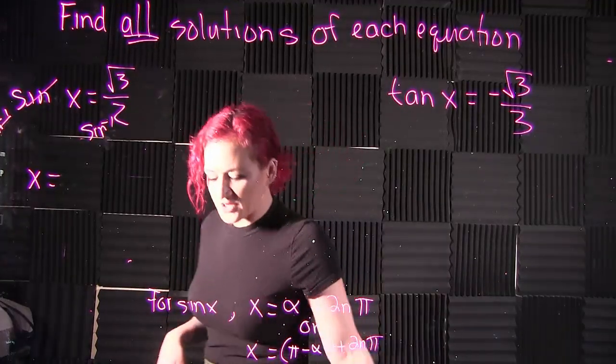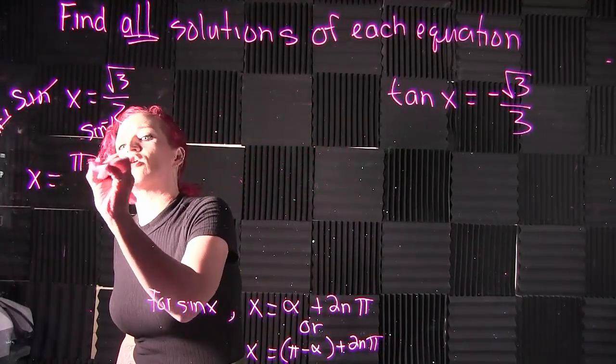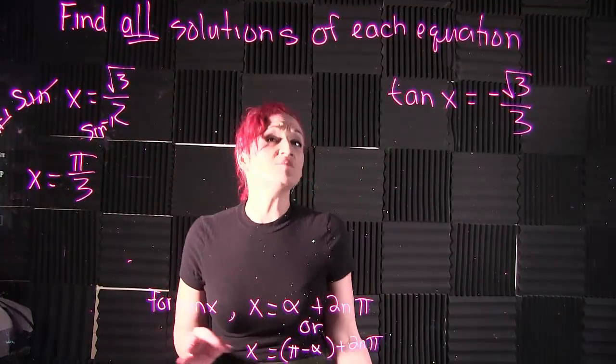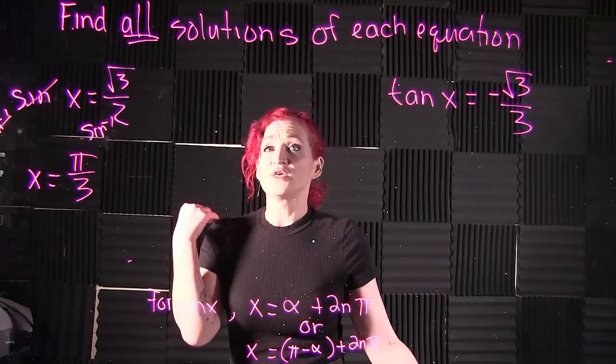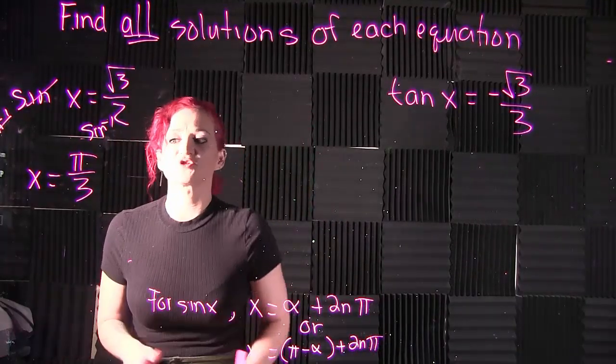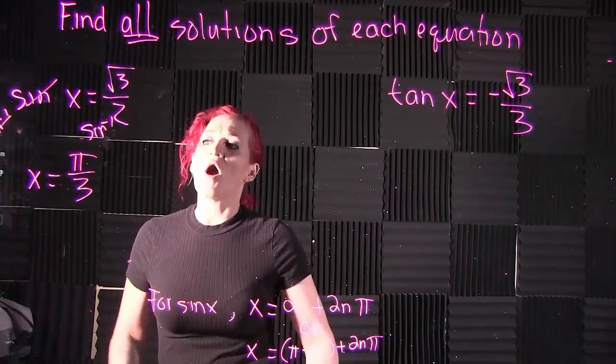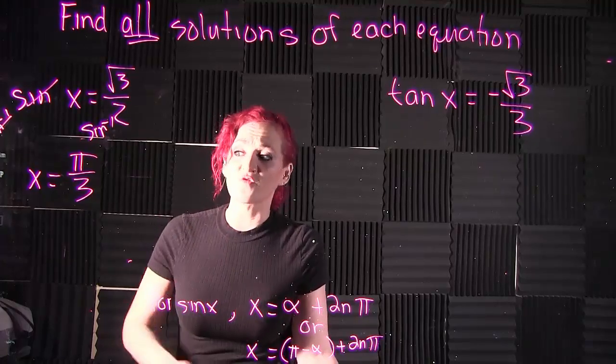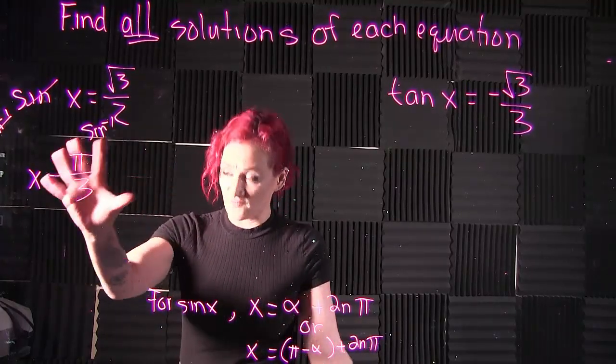Throw that into your calculator. Inverse sine of square root of 3 over 2 is π over 3. Now, when it comes to stating all solutions of sine, all solutions are where x equals alpha. Alpha is our π over 3, what we just solved here. It's your first solution.